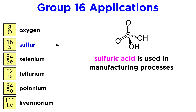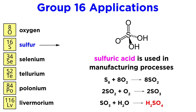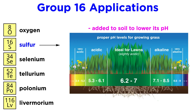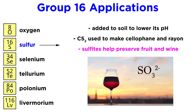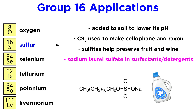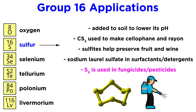For sulfur, sulfuric acid is used in countless manufacturing processes, and it is synthesized on large scales according to a pathway forming sulfur dioxide and then sulfur trioxide on the way. Sulfur is added to soil to lower its pH. Carbon disulfide is needed to make cellophane and rayon. Sulfates have utility in preserving fruit and wine. Surfactants and detergents contain sodium lauryl sulfate. And S8 has utility in fungicides and pesticides.